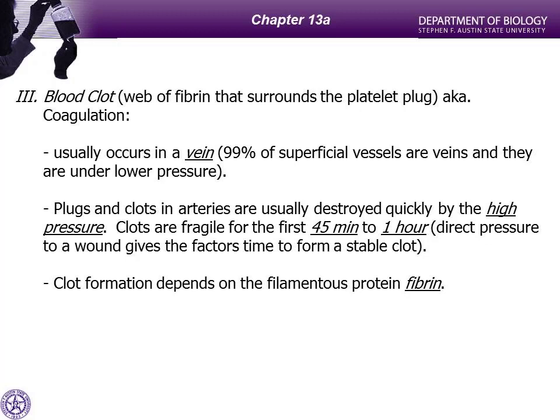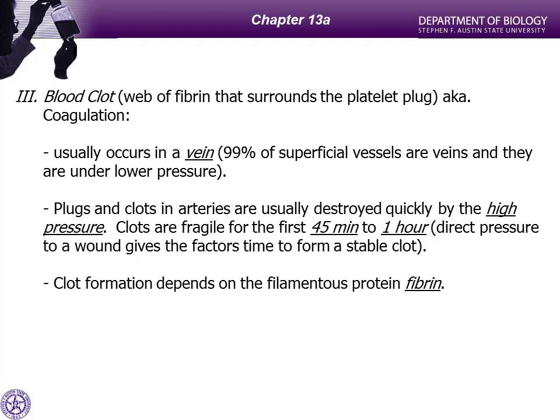There is an enzyme that is activated and converts fibrinogen — the inactive protein — into the active fibrin, which is a very sticky filamentous protein that forms the spider web we call a blood clot.